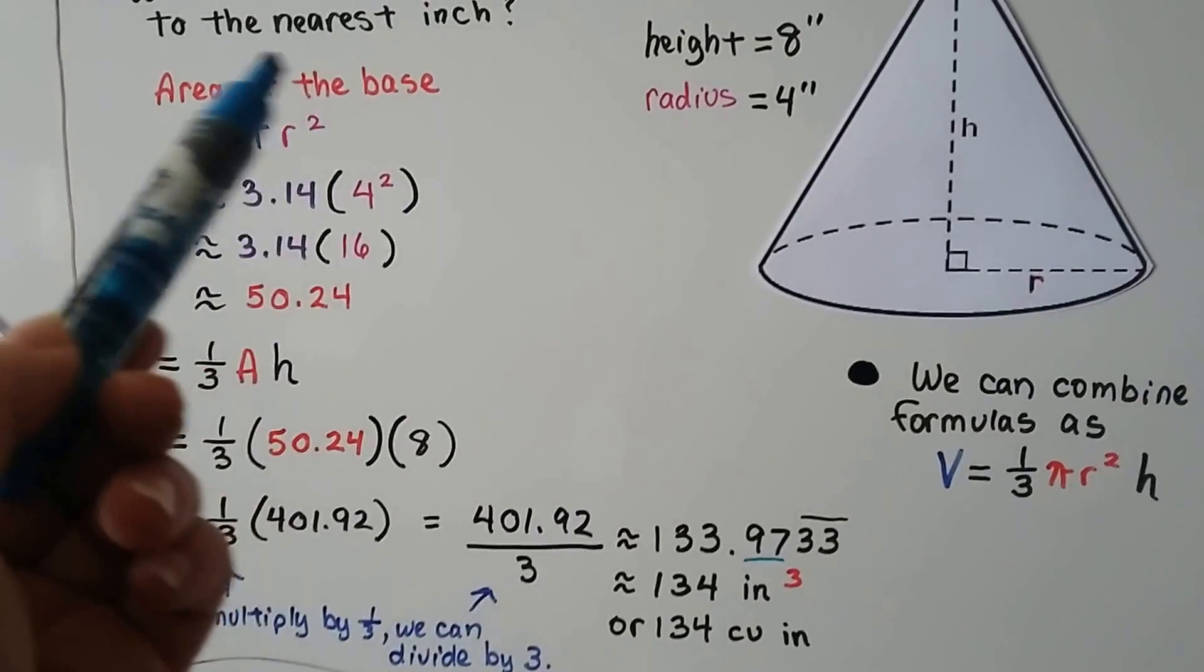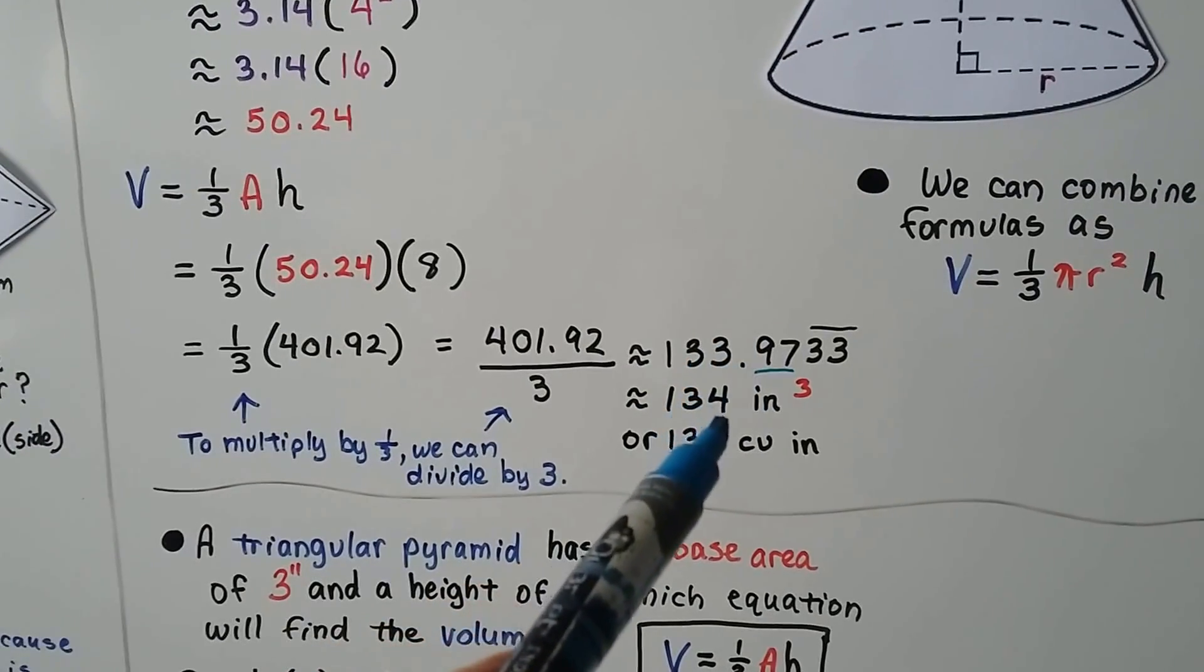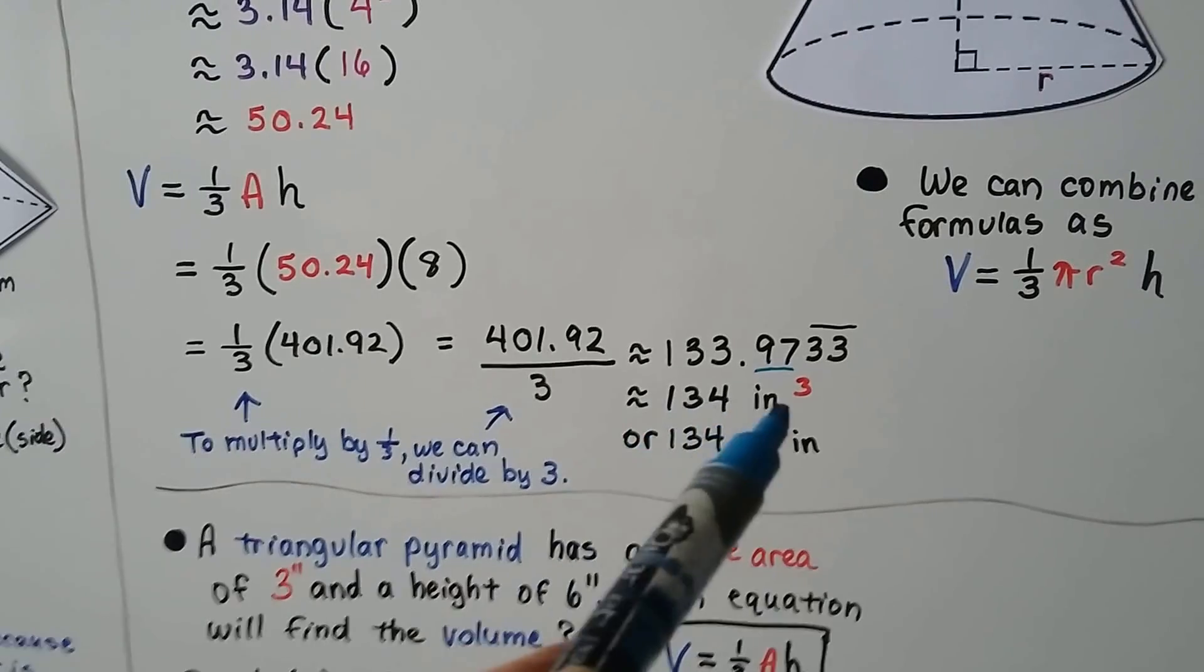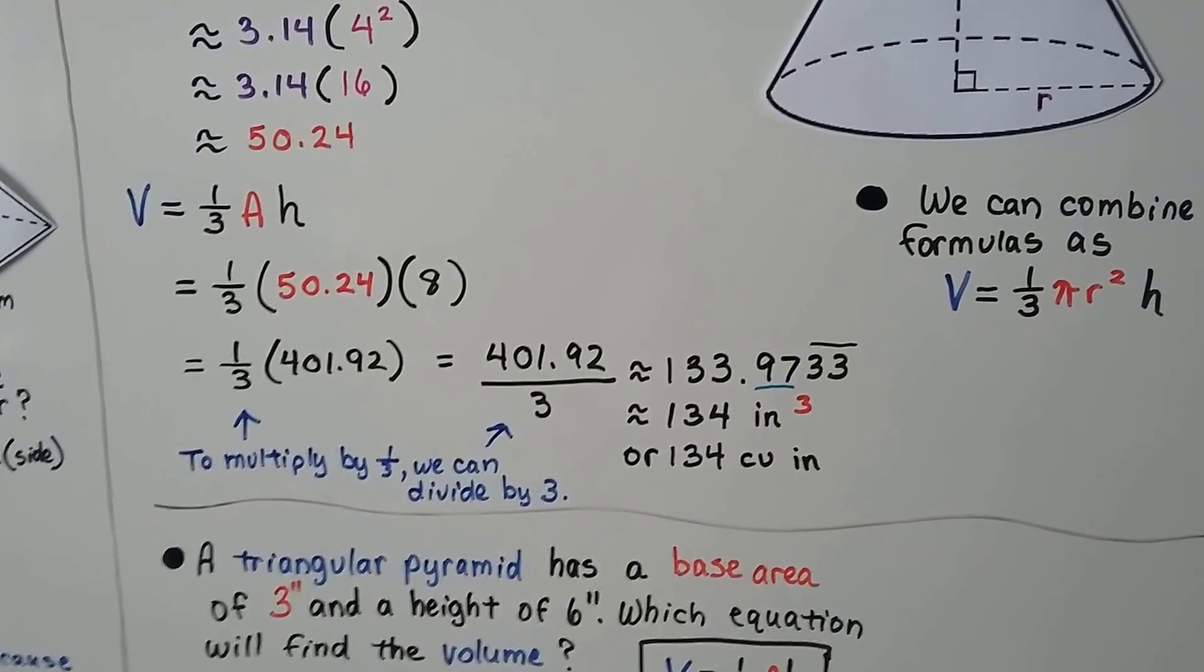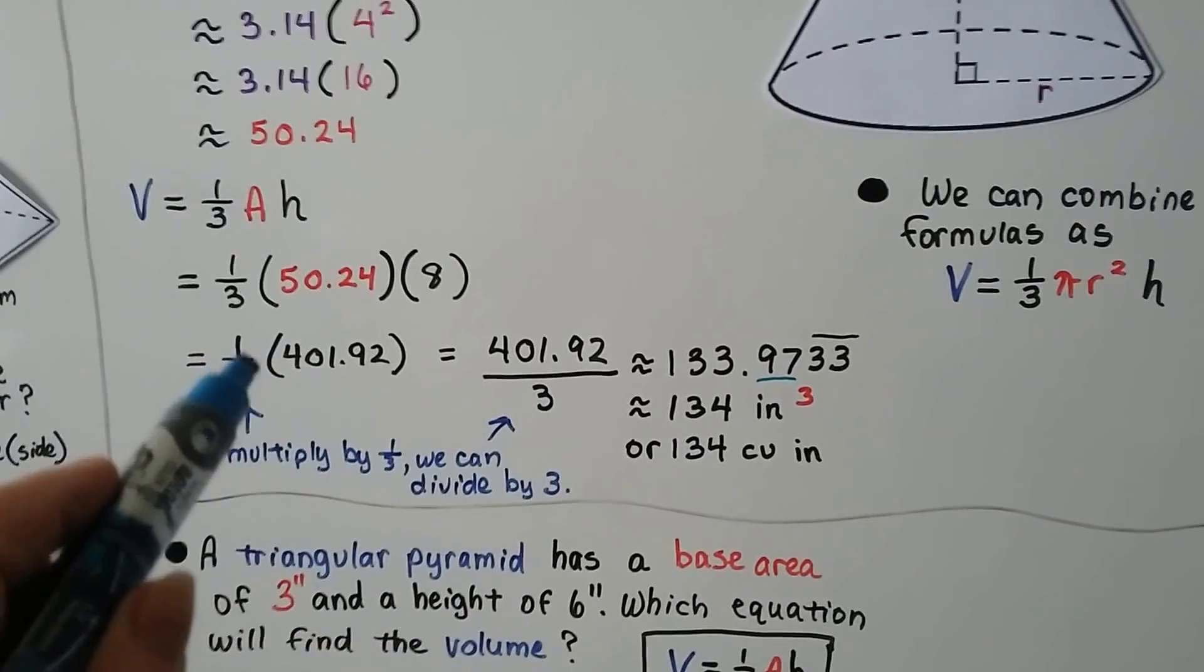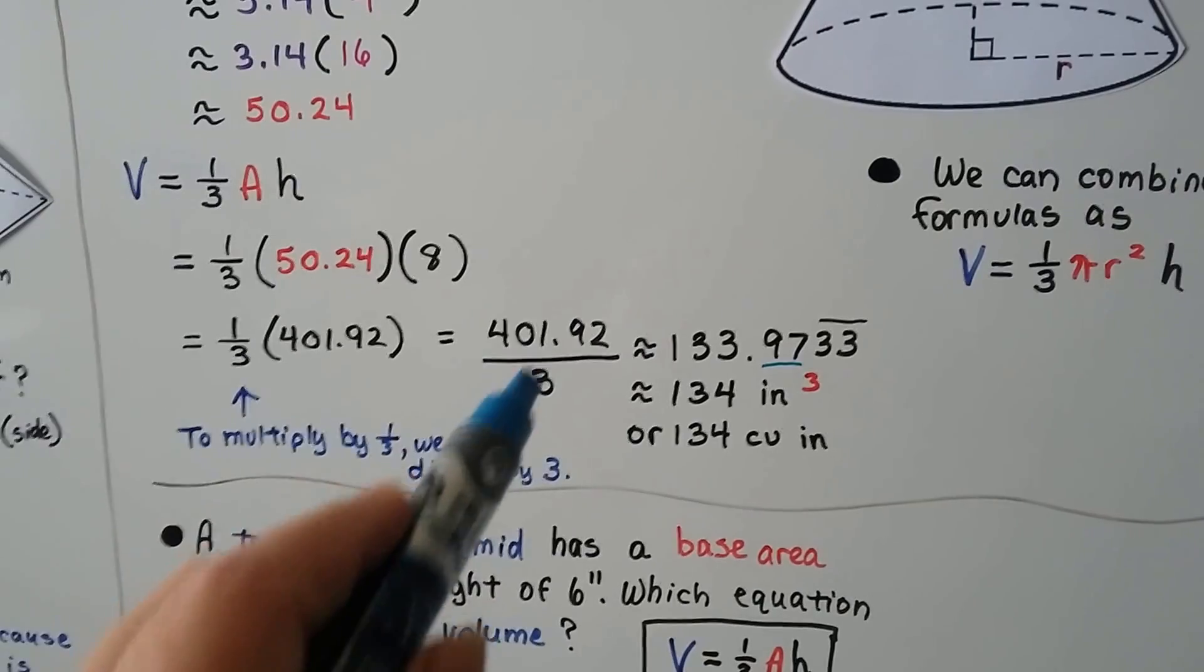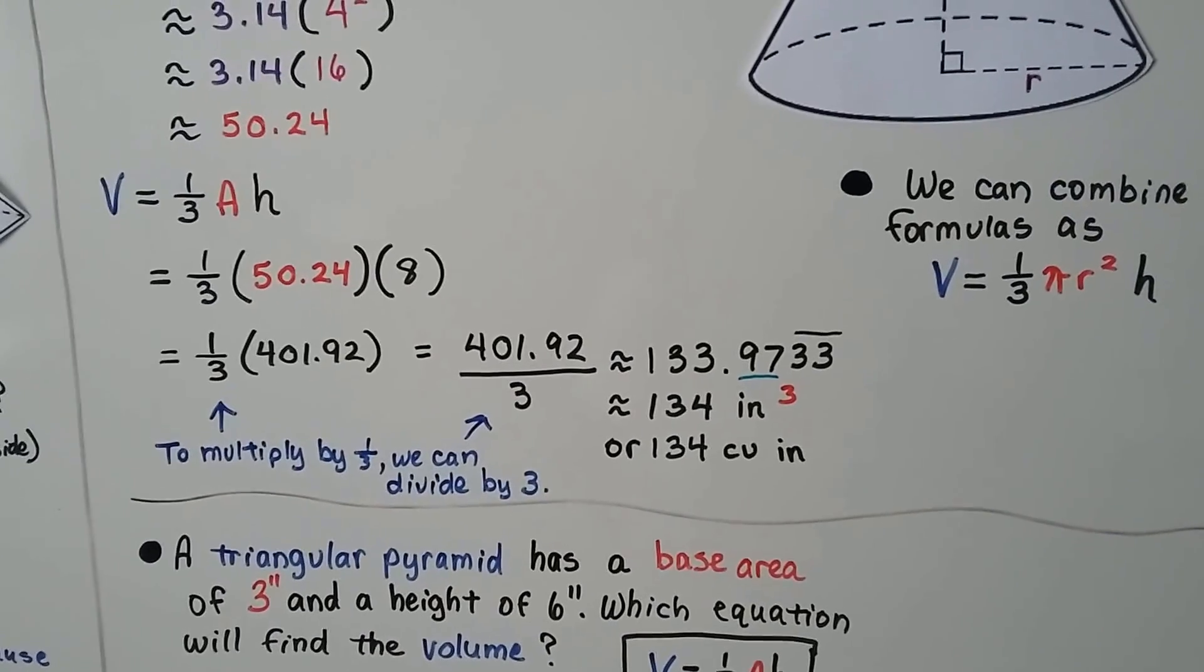And we come up with 133.97 and then the 3's keep repeating. But we want it to the nearest inch. The nearest inch, the 9 tells the 3 to go up to a 4. So we have the nearest inch as 134 inches cubed. So just remember, you don't want to multiply by .33 with the calculator. You want to just divide it by 3. It would be quicker.